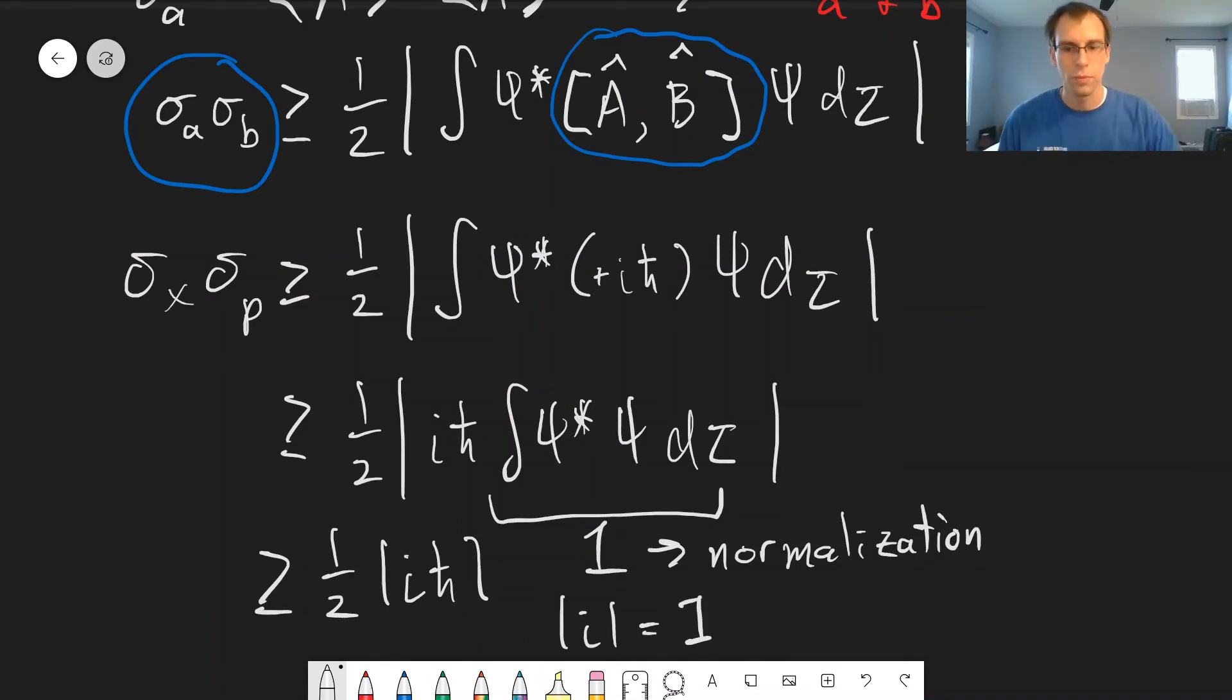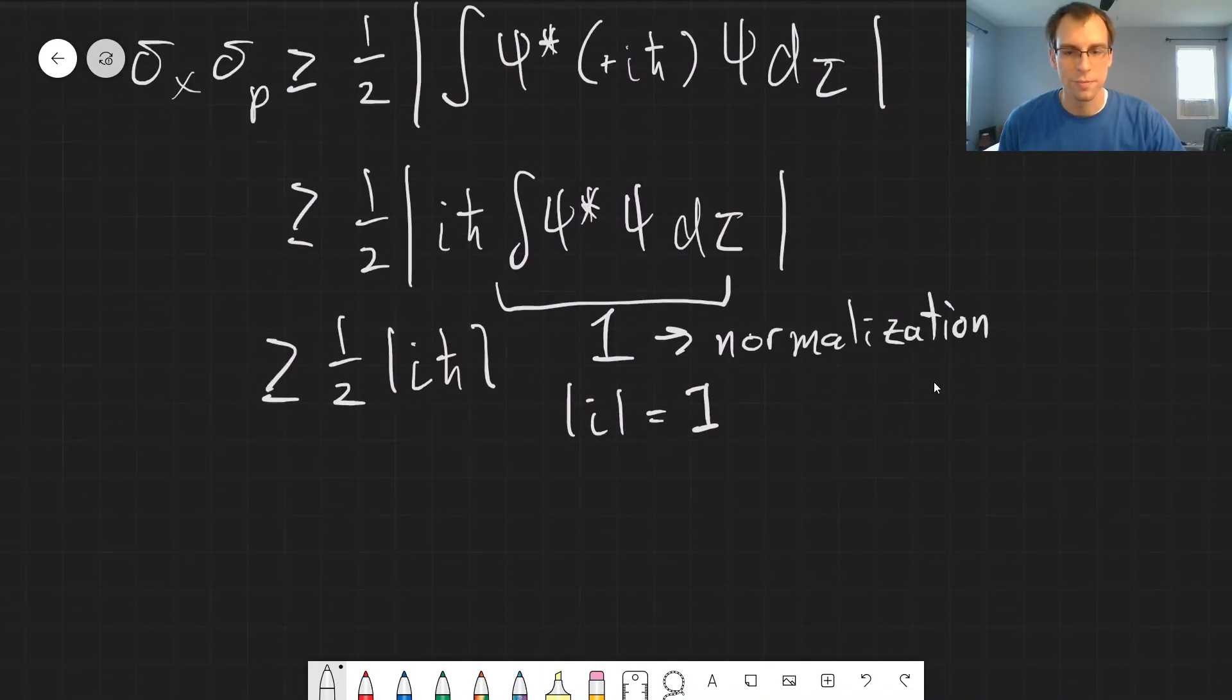So overall, our final result is that sigma x sigma p is greater than or equal to h bar over two. This is the uncertainty principle that we talked about all the way back in chapter one. That's one of the most famous equations of quantum mechanics.